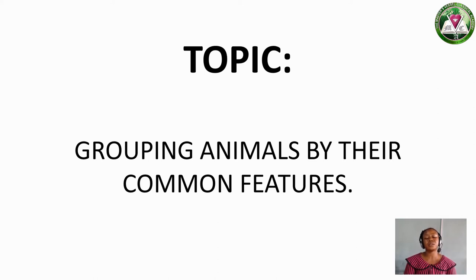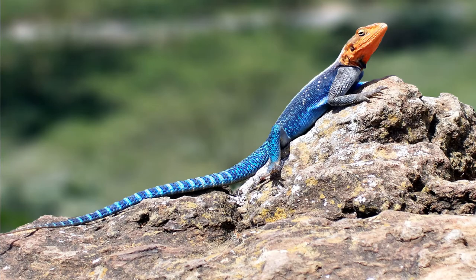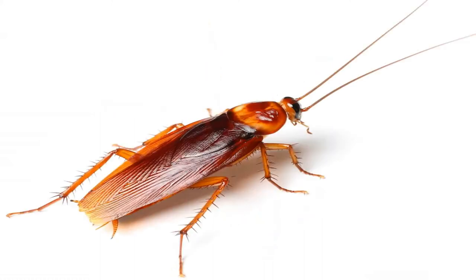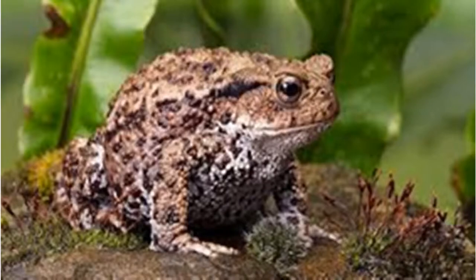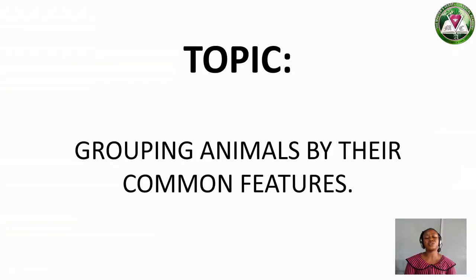In our last lesson, I talked to us about animals in the school compound. We mentioned the animals in the school compound. Some of them are lizard, spider, cockroach, rat, toad, and so on. Now we are going to talk about grouping animals by their common features.